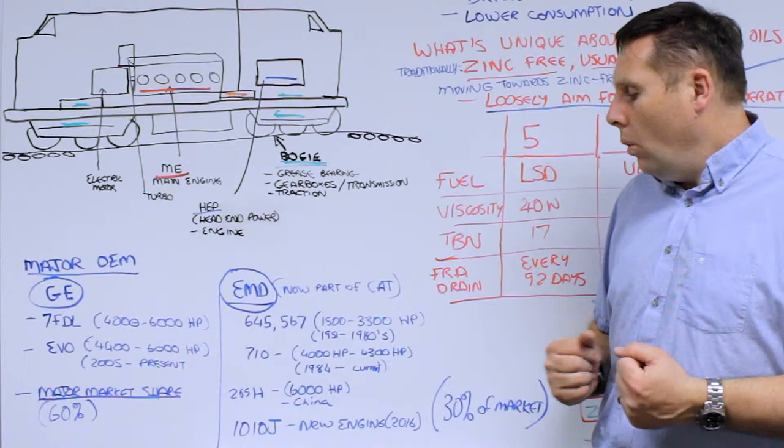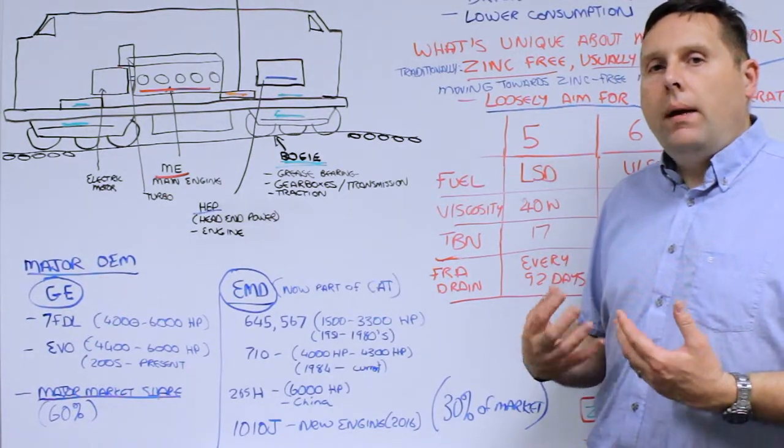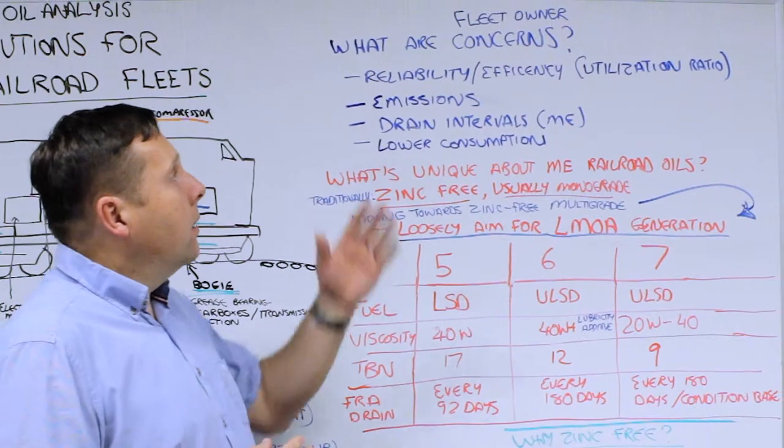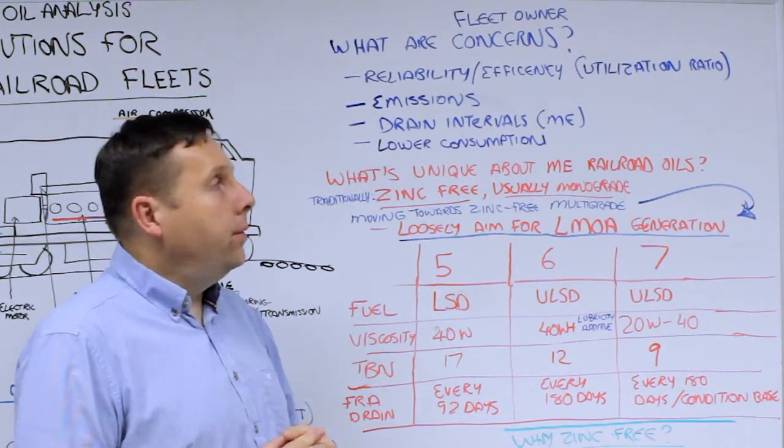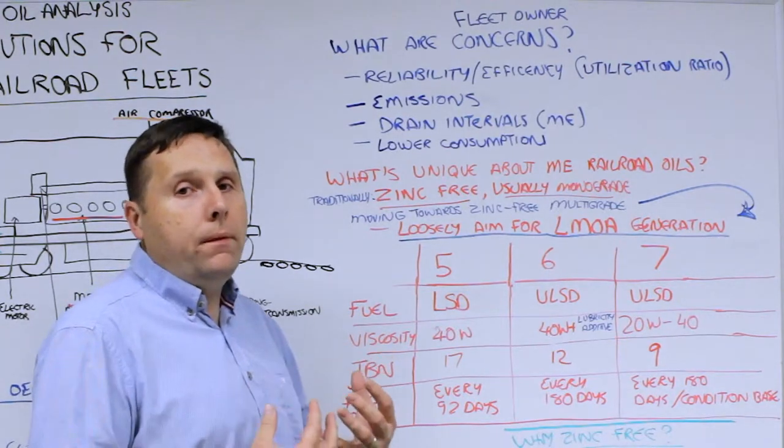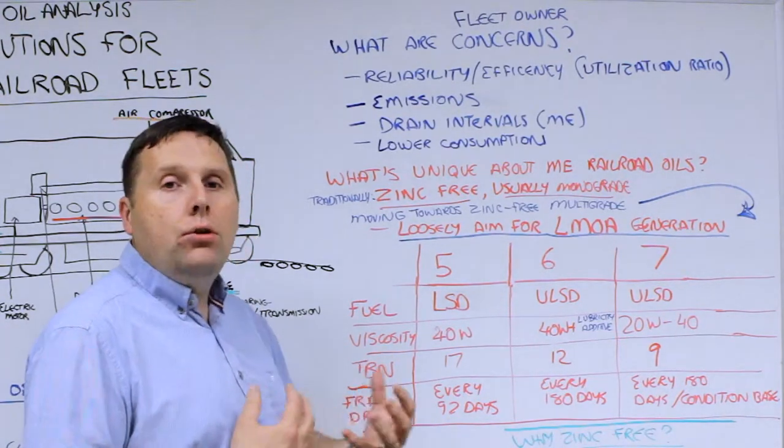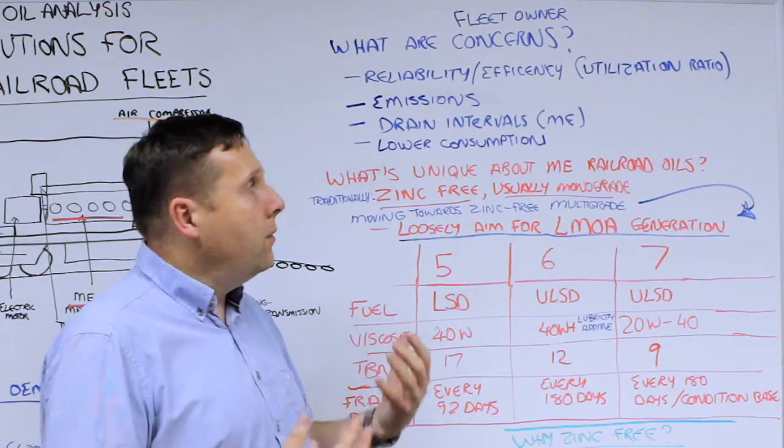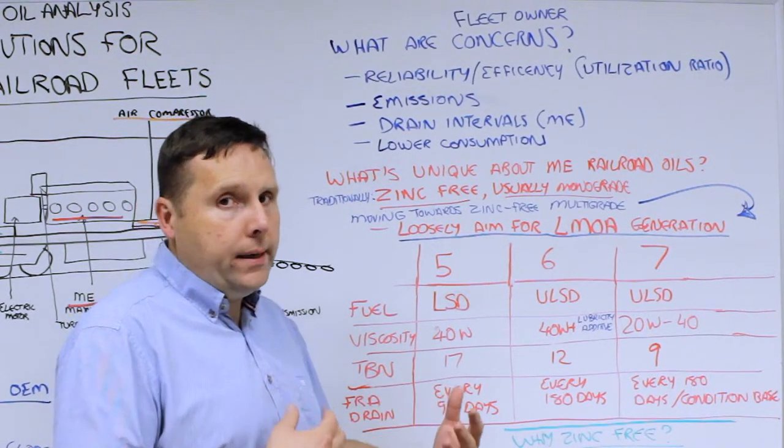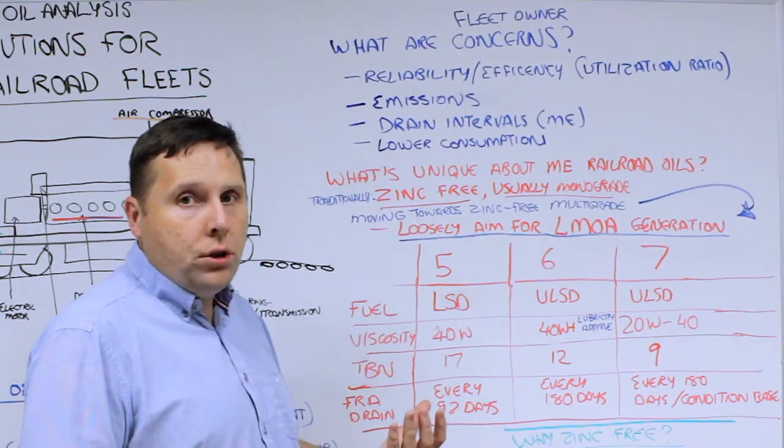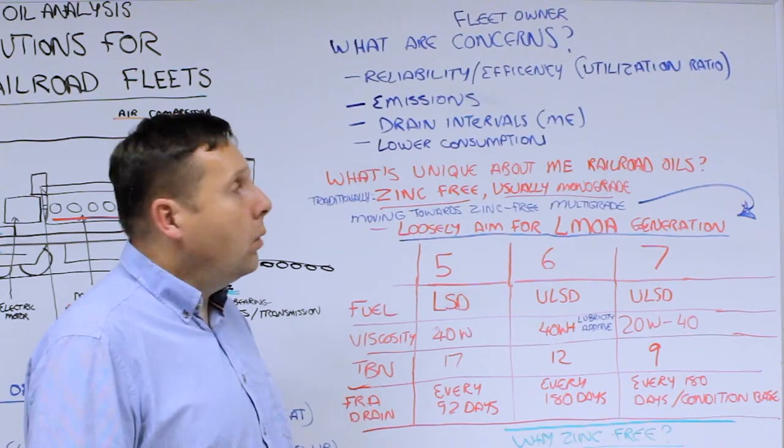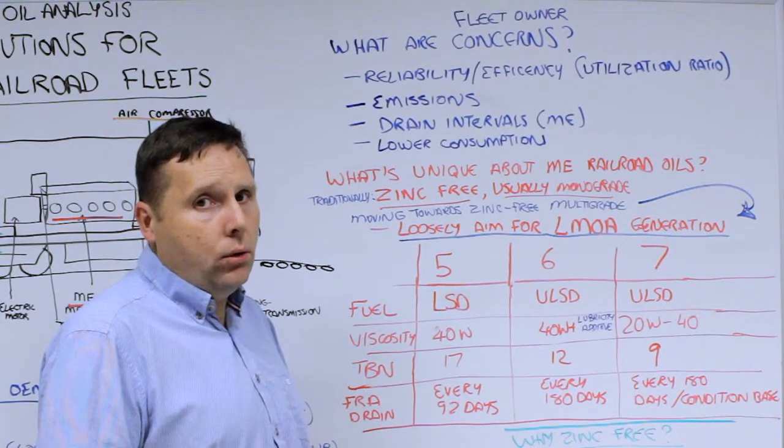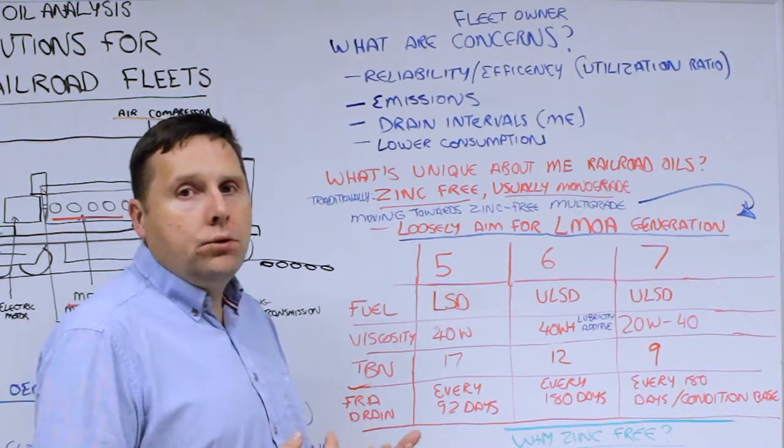What are the concerns for fleet managers of locomotives? The major concerns are reliability of those locomotives and efficiency. Efficiency is the utilization ratio—essentially when is the locomotive ready for duty and can it stay in duty for long periods. Fleet managers also worry about new engine emission control, extending drain intervals, especially for the main engine with several hundred gallons of high-grade lubricant, and lower consumption rates for both oil and fuel.